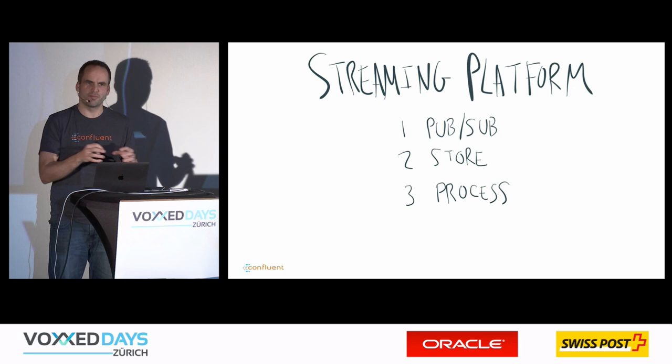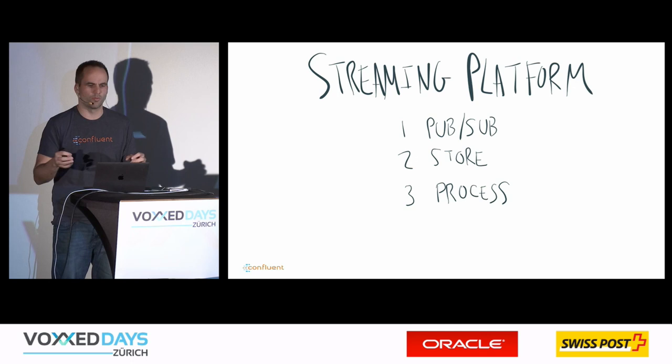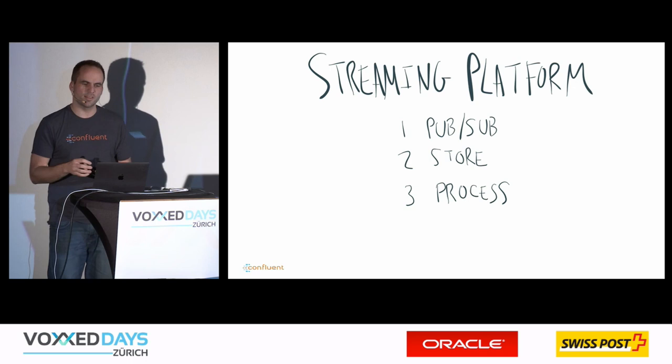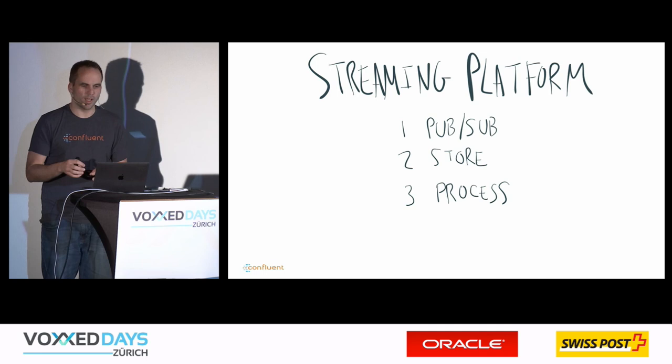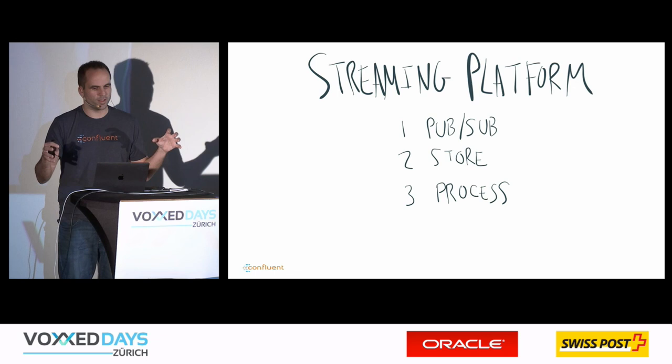Kafka is now the de facto standard for these use cases and is used in almost every company worldwide. The key difference is that Kafka is much more than just messaging. Number one: it's publish-subscribe messaging. Number two: it's distributed storage where you can store data as long as you want in a scalable and fault-tolerant way. Number three: you can also process data on Kafka.